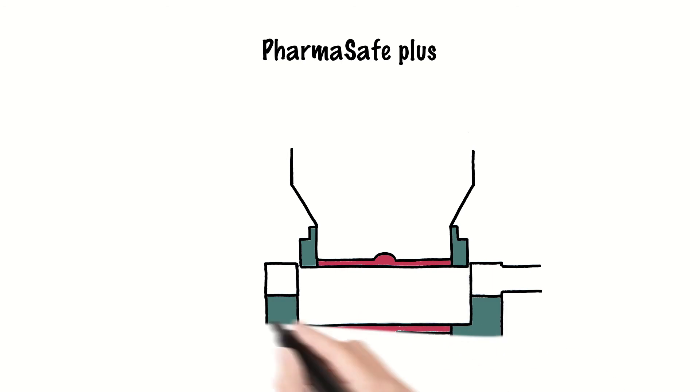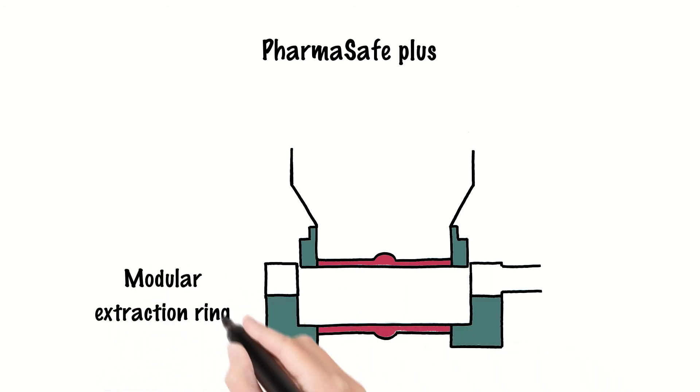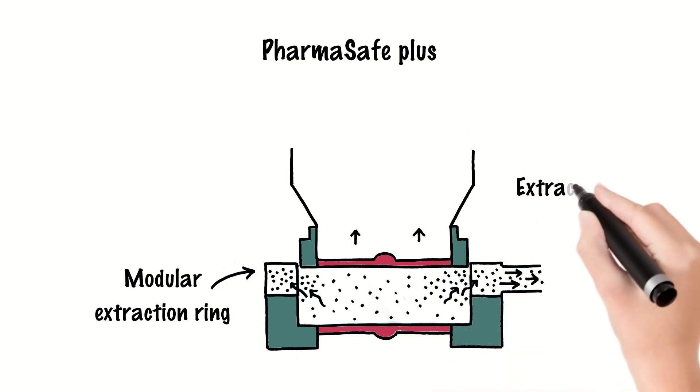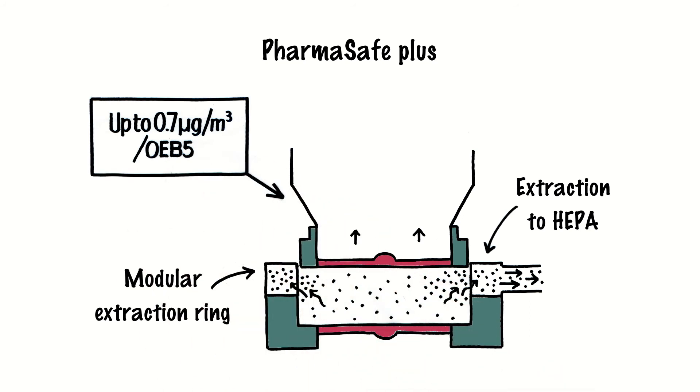the PharmaSafe Plus includes a modular extraction ring coupled to the active unit to safely capture airborne particulate into the extracted airstream once the valve is undocked, performing up to 0.7 microgram per meter cubed.